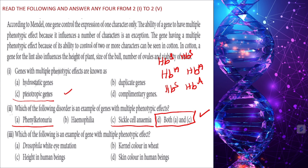Which of the following is an example of a gene with multiple phenotypic effects? Multiple phenotypic effect means one gene controls many characters. In Drosophila, the white eye gene also controls the number of ova produced, ovary development, and wing size — this is pleiotropy.